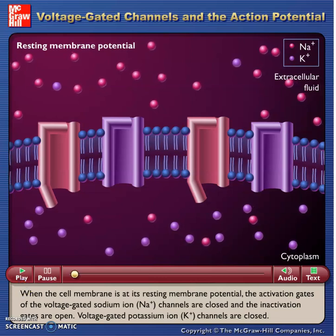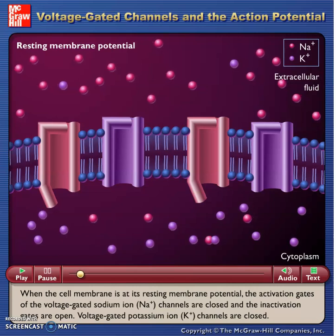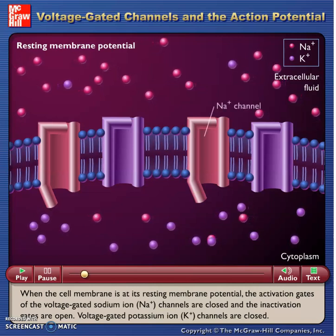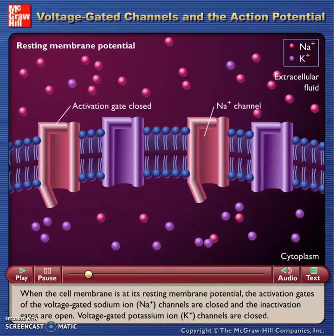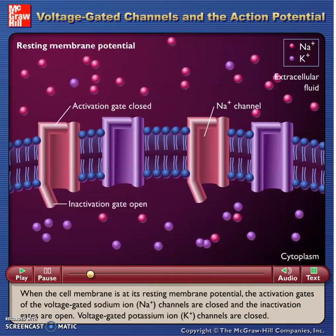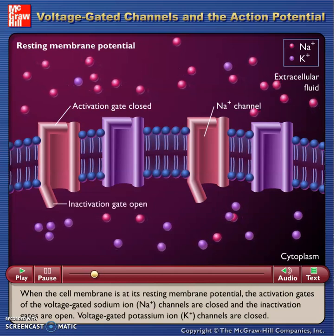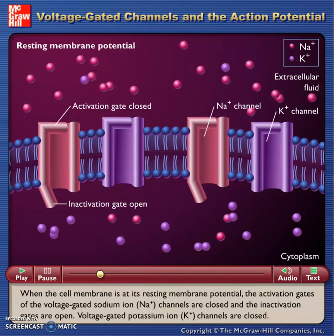When the cell membrane is at its resting membrane potential, the activation gates of the voltage-gated sodium ion channels are closed and the inactivation gates are open. Voltage-gated potassium ion channels are closed.